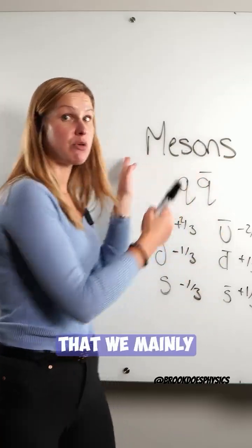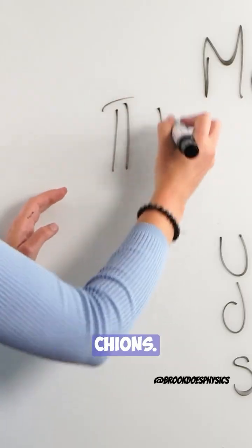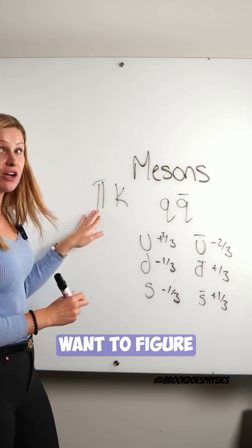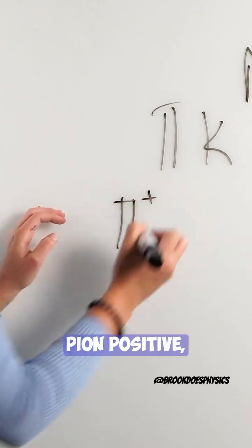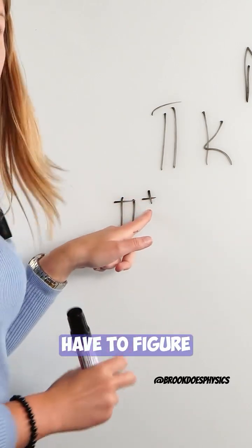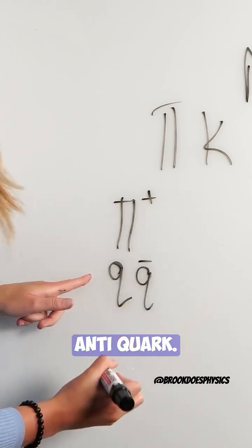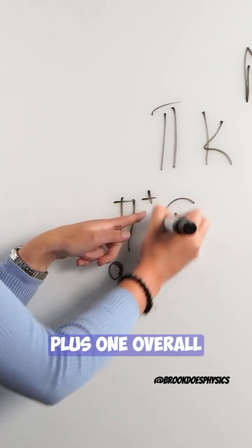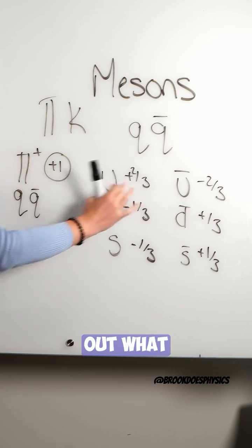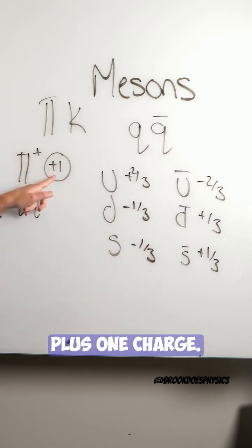So the two types of mesons that we mainly talk about are called pions and kaons. If we want to figure out what quarks are in a pion positive, the first thing we have to figure out is we know it's going to have two quarks, so a real quark and an anti-quark. It's got a plus one overall charge. So I have to figure out what combination is going to give me a plus one charge.